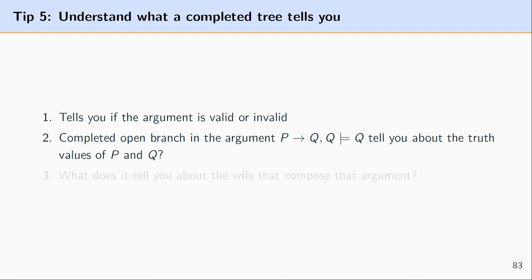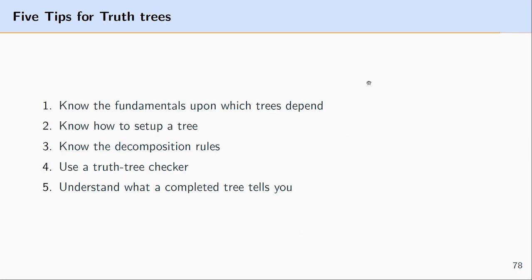So if there's a completed open branch for this in the tree of this argument you want to say well what does this tell me about the truth values of the propositional letters that compose this argument as well as what does it tell me about the truth values of the formulas that compose it so the truth values of the propositional letters like P and Q and what does it tell me about the complex formulas like if P then Q, Q and the conclusion here.